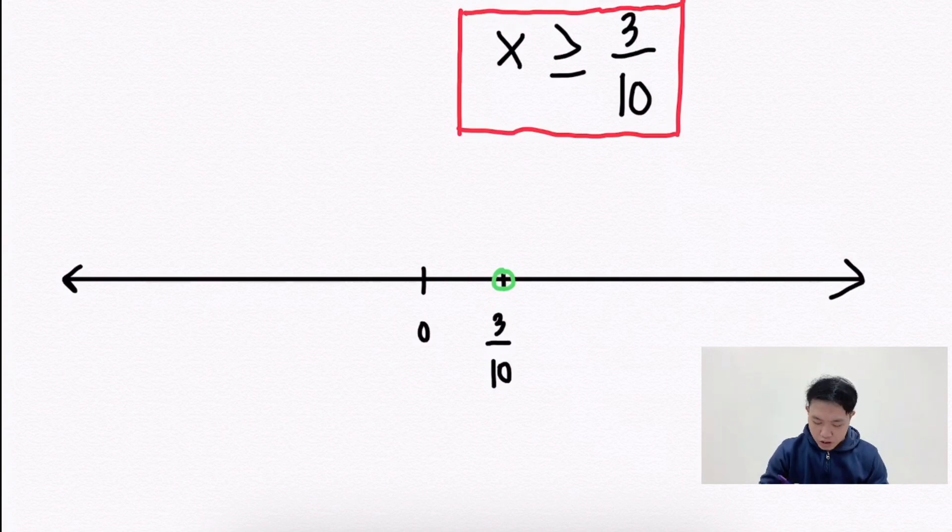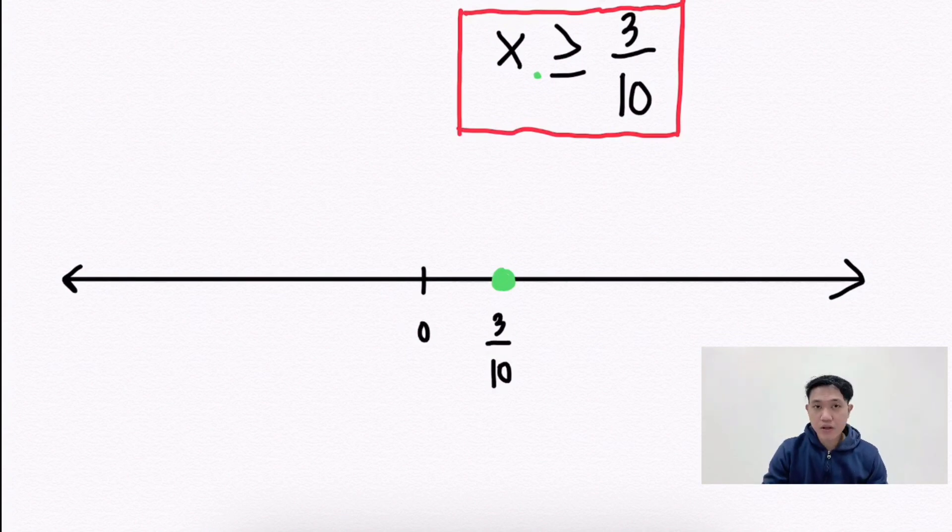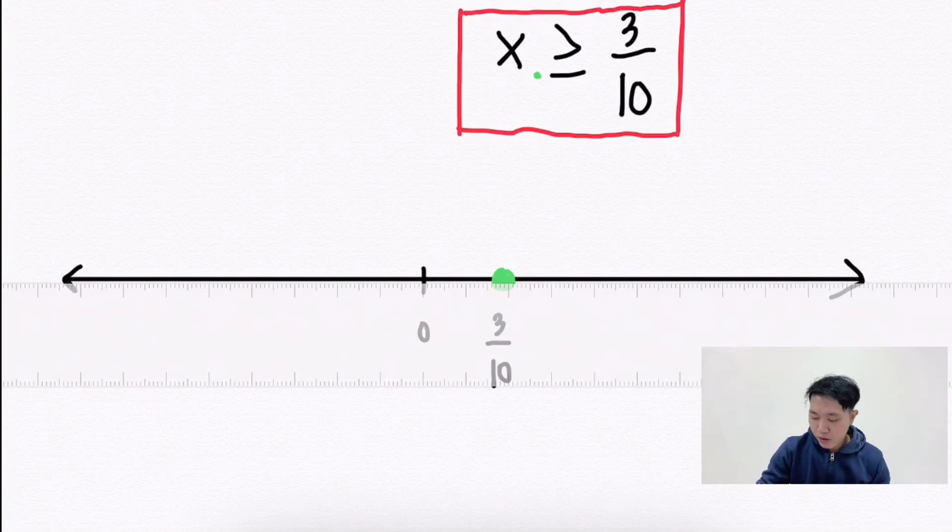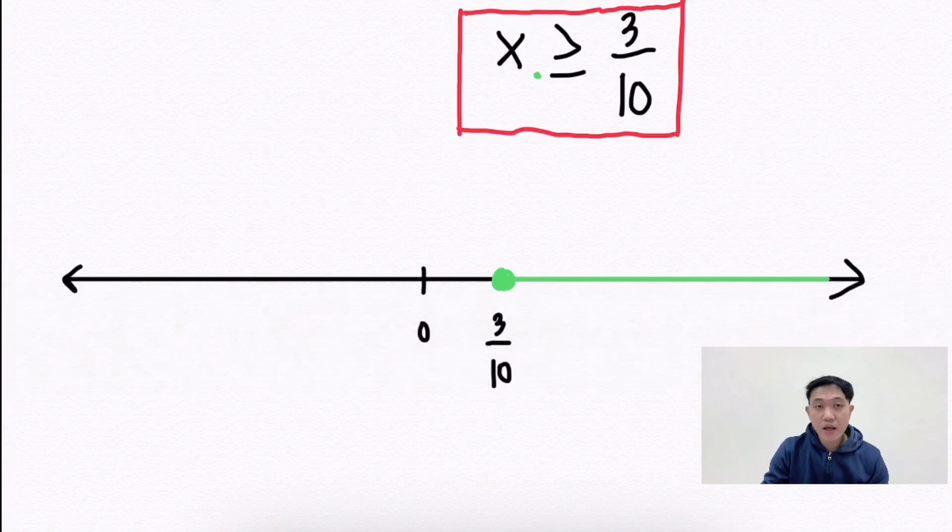Going back to the inequality sign, it says greater than or equal. Therefore, 3 over 10 is included. Therefore, from 3 over 10 up to positive infinity is included in the solution set.